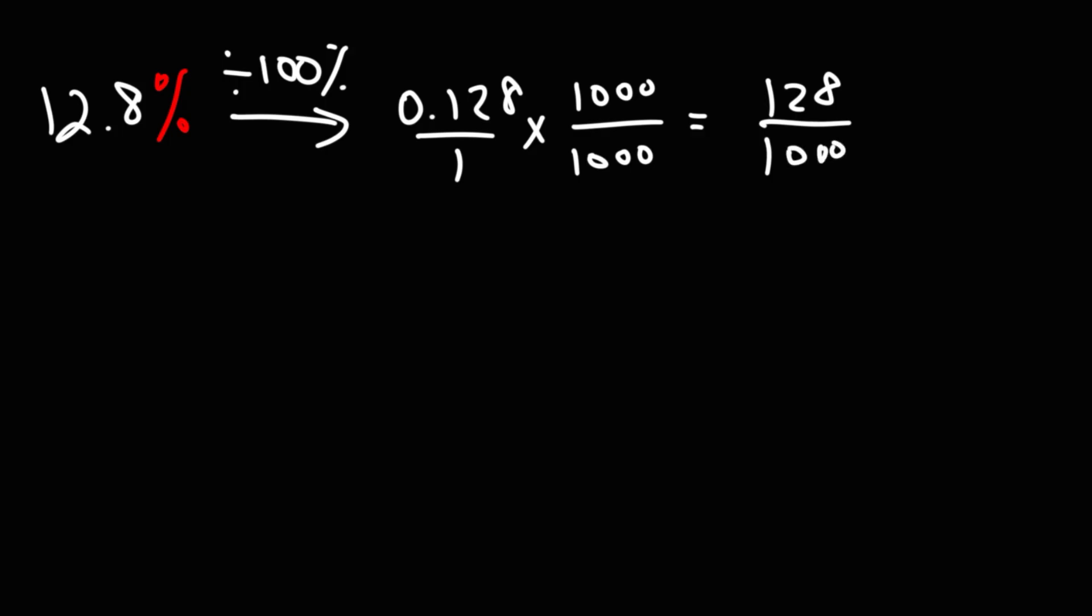So now we need to simplify the fraction. Since both numbers are even, we could divide by 2. Half of 128 is 64. The way you can see that is 12 divided by 2 is 6, 8 divided by 2 is 4. And half of 1,000 is 500. You can see it this way: 10 divided by 2 is 5, and then carry the two zeros. So you get 500.